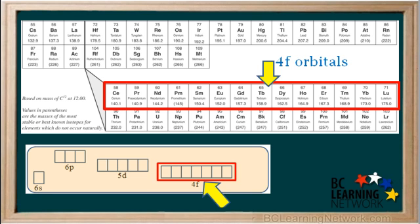The 14 elements that gradually fill up the 4f orbitals are this group on the periodic table, shown as a row near the bottom, separated from the rest of the table.